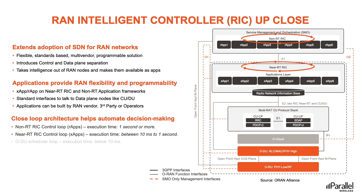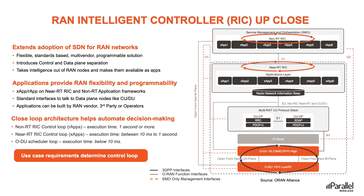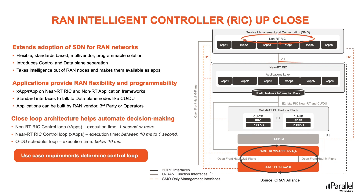RIC applications provide RAN programmability and flexibility, using standard interfaces towards different network components to support optimization. There are three control loops available depending on the needs of the application: first, the non-real-time RIC control loop with R-Apps for service apps requiring execution times of one second or more; second, the near real-time RIC control with X-Apps for apps with execution times between 10 milliseconds and one second; and third, the O-DU scheduler loop for apps requiring decision and execution times below 10 milliseconds.